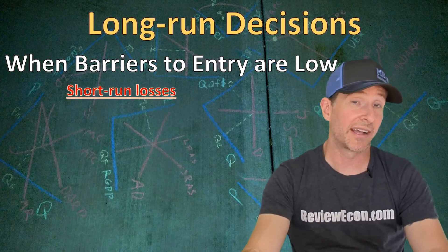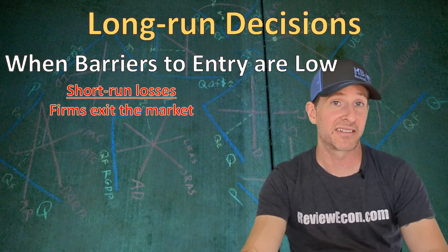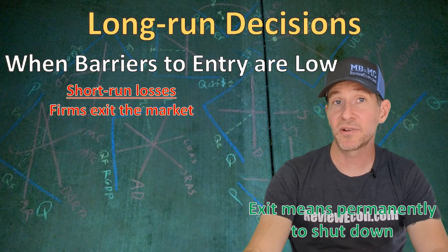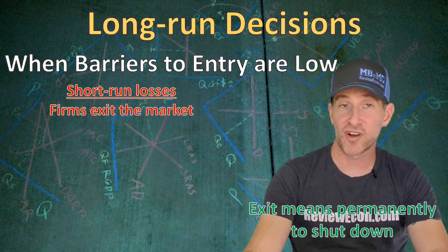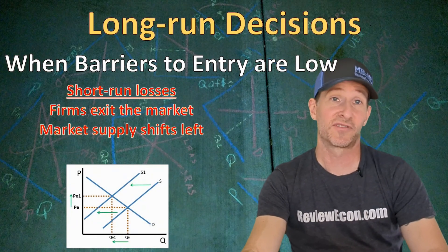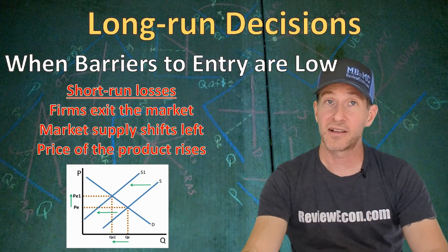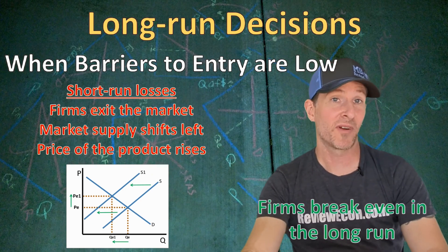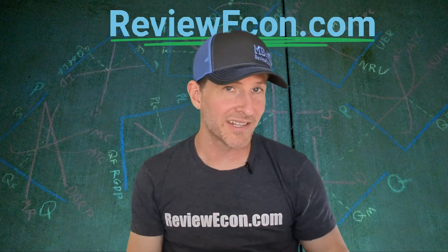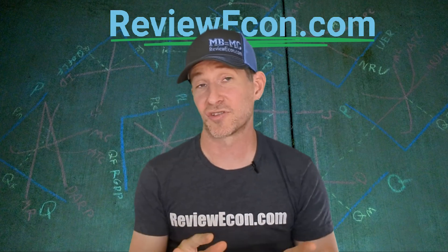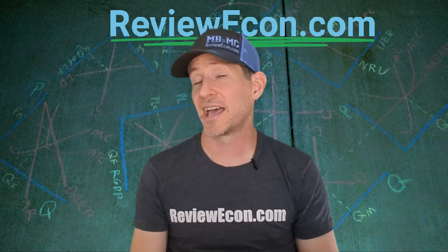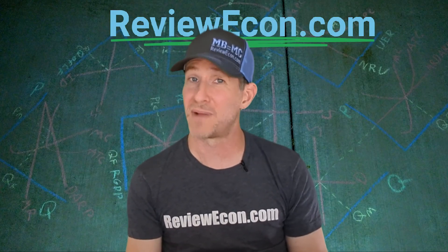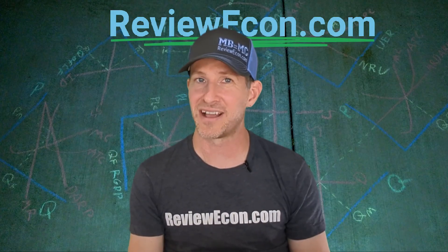If firms are earning short-run economic losses, then some firms are going to exit the market permanently and use their resources where they will be more profitable. As those firms exit, supply in the market shifts to the left, causing the equilibrium price to rise. As a result, firms that remained in the market will break even in the long run. And there you have it — that's what you need to know about firm decisions in the long run and the short run. If you still need a little more help, head over to ReviewEcon.com and pick up the total review booklet. It has everything you need to know to ace your microeconomics or macroeconomics exam.